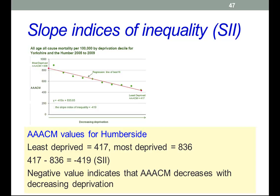Basically, it's just the least deprived minus the most deprived — in this case 417 minus 836, which is minus 419. The negative slope indicates that this particular indicator decreases with decreasing deprivation. So the worse off you are, the more likely you are to die relatively young, as we've been discussing all the way through this.